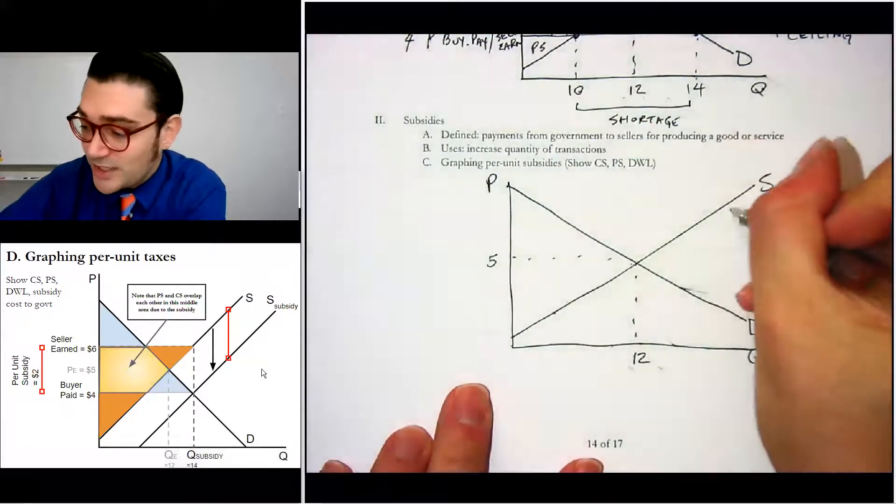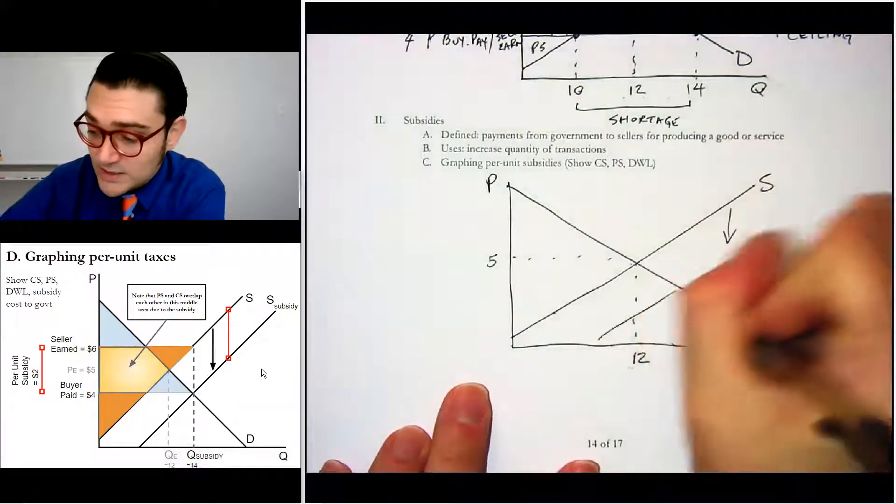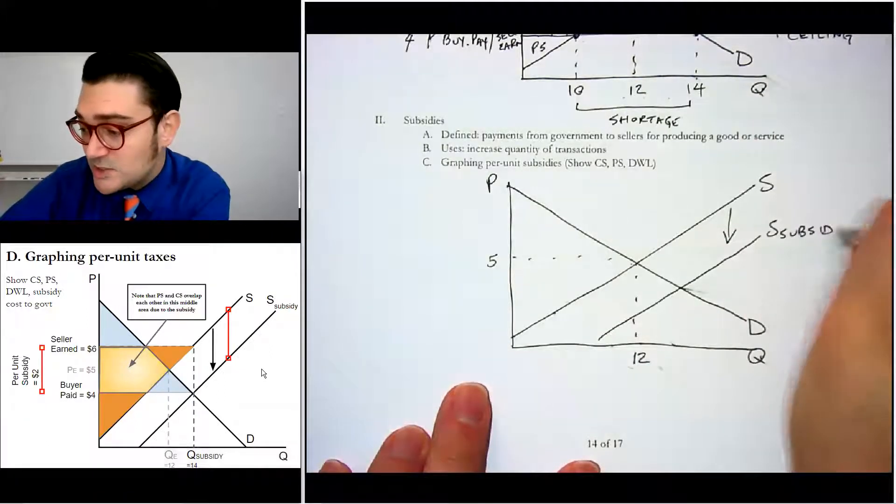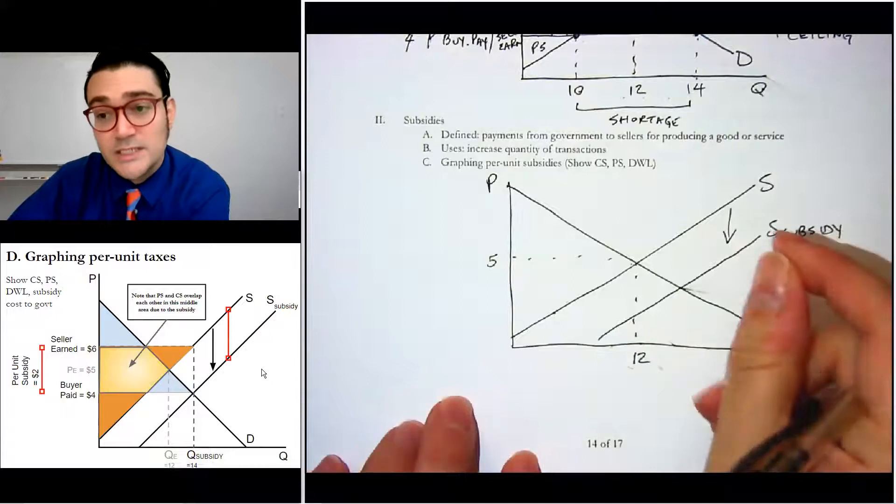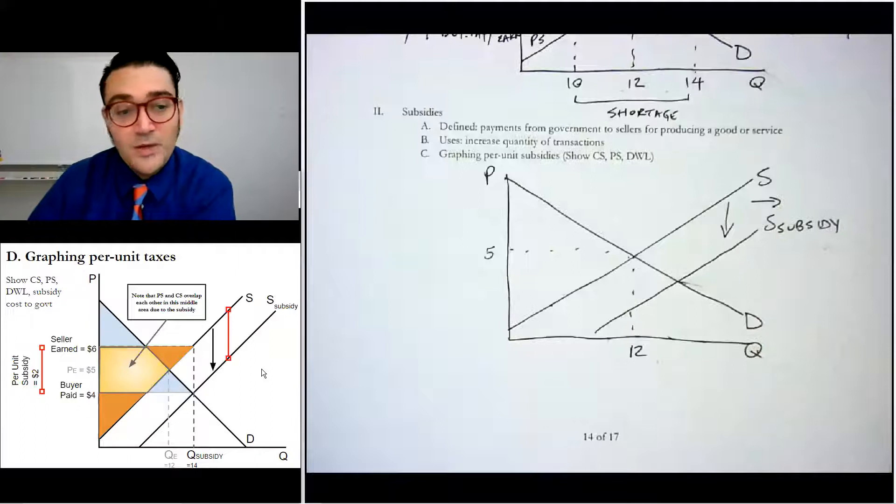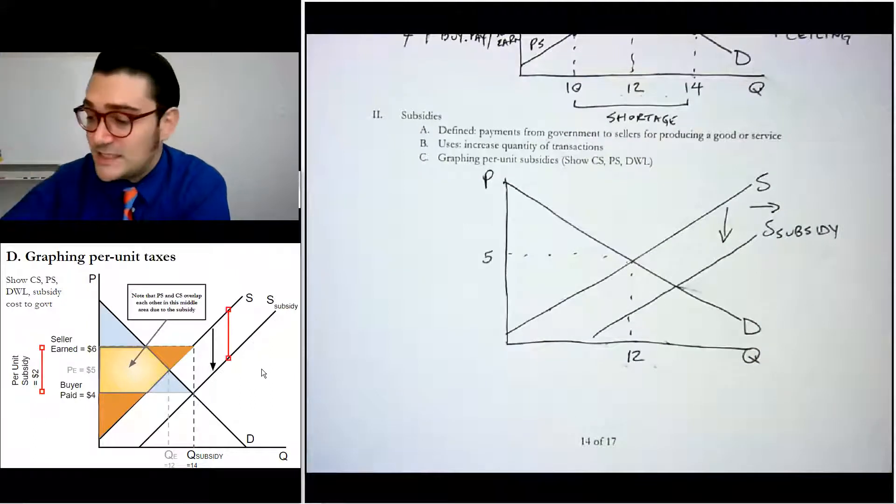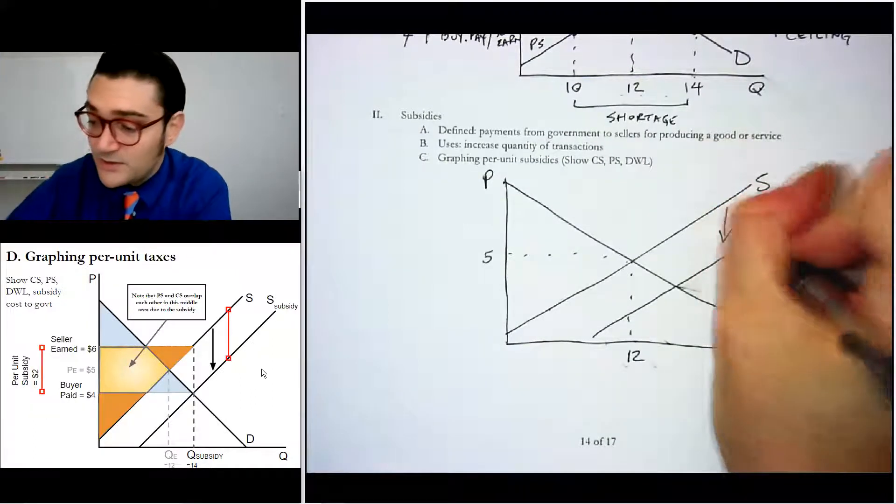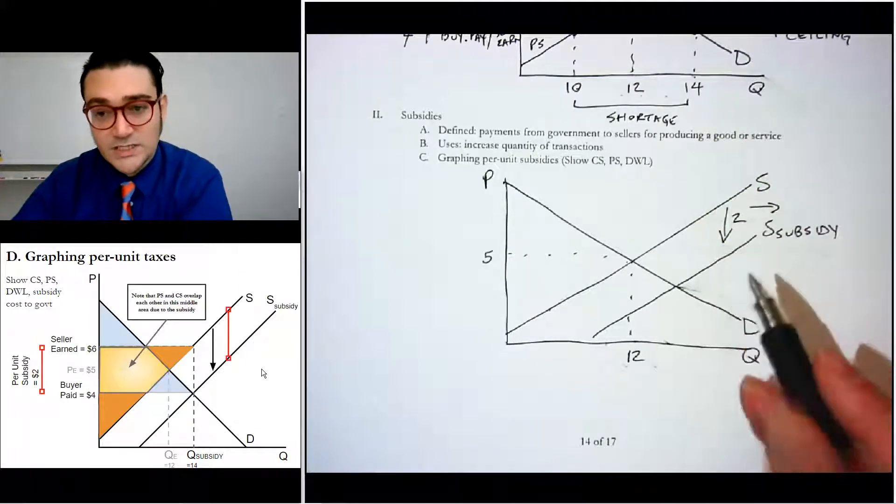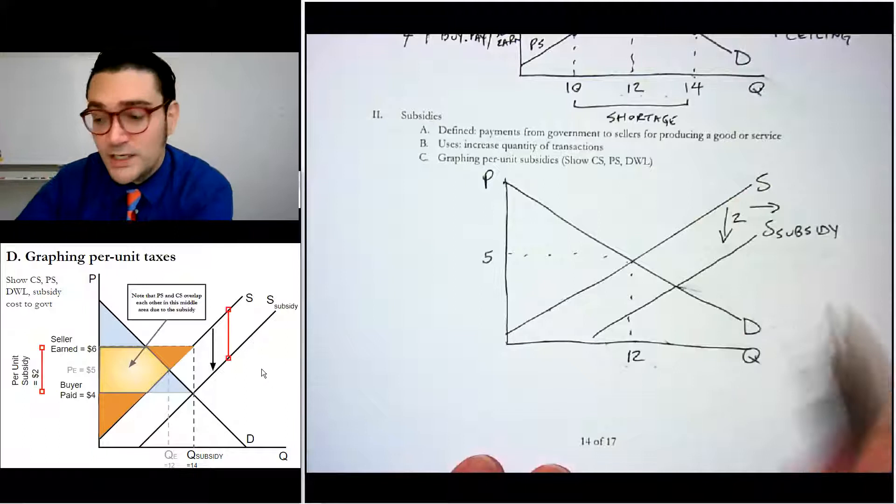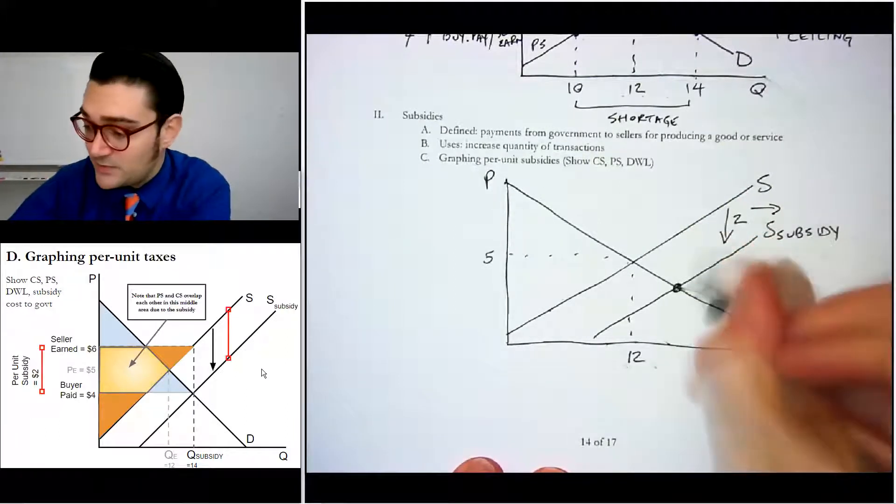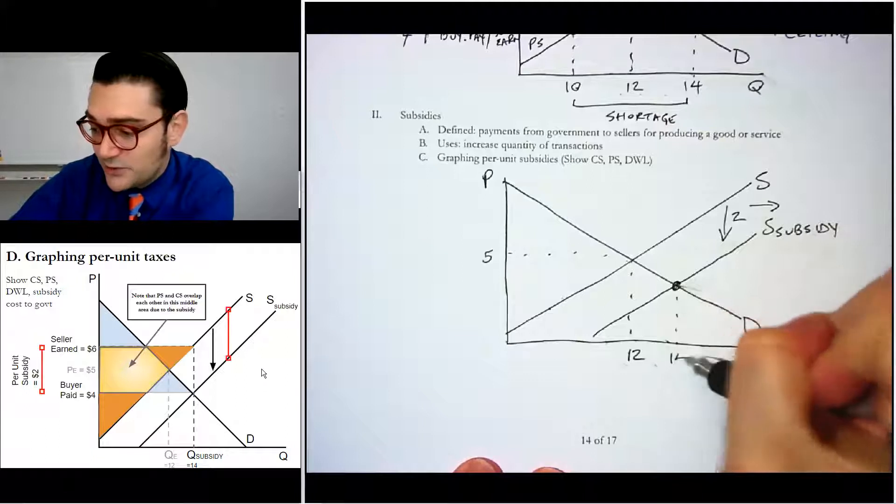We're going to shift this supply curve down and we're going to say that this is S subsidy because what it's doing is reducing the input costs of producing. So it increases supply. It's a rightward shift. It's the other way to think about it. But the vertical amount that it's shifted down by is the per unit amount of the subsidy. So it's $2 cutting the cost every single time. Now the new quantity is going to be where S subsidy and demand intercept.